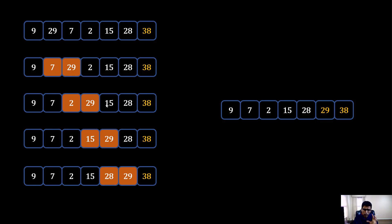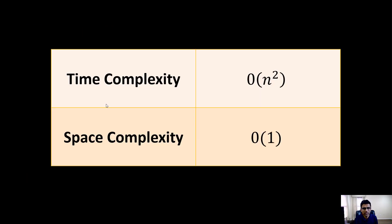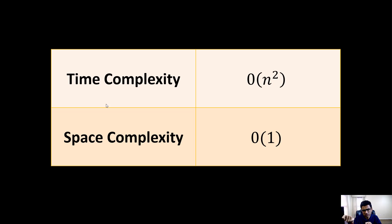With two nested for loops, the Big O complexity is O(n²). If you don't know about Big O complexity, please watch the Big O notation tutorial in the same playlist — it was the second video. Time complexity is O(n²) and space complexity is O(1) because we are not using any additional space — we use the same array and just swap elements, requiring only one extra temporary variable.